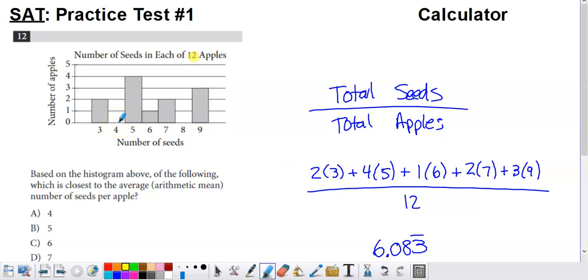Don't have to worry about anything at the level of four seeds. But at five seeds, we had four apples with that many seeds. So four times five is going to give us that. We do that same sort of calculation with the rest of the bars in that histogram.